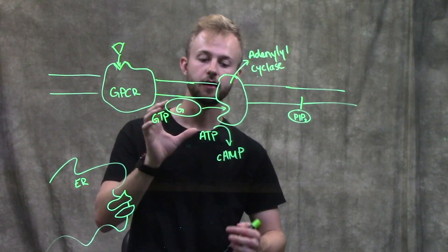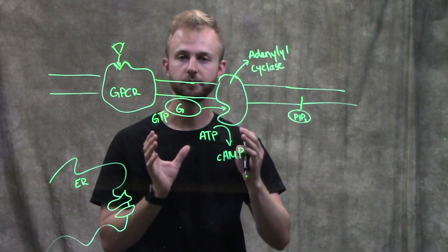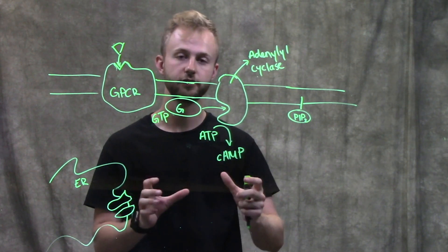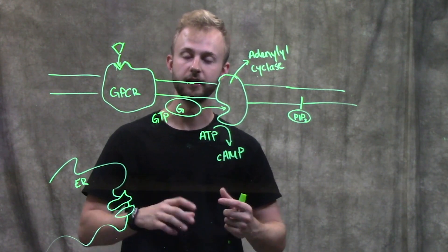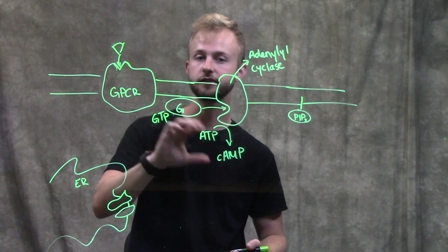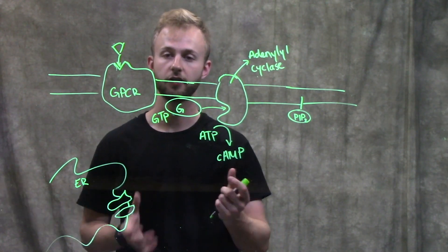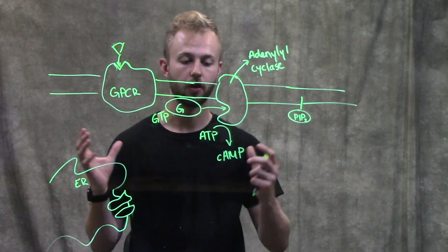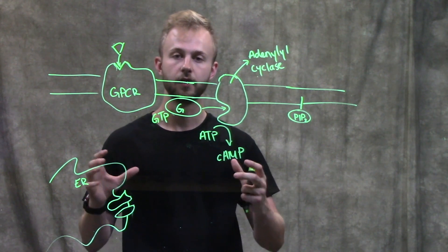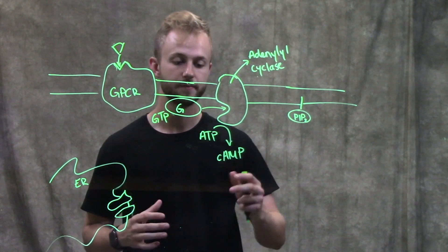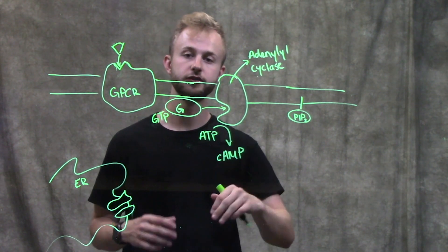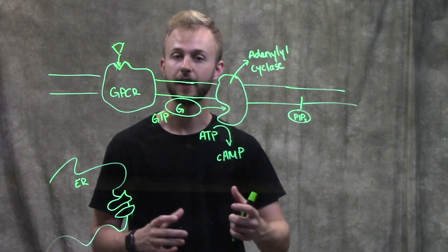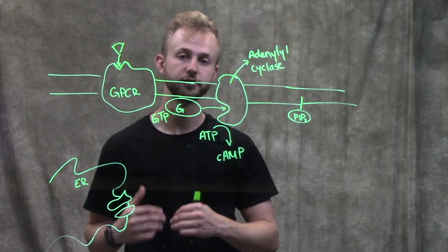But when we have this happening, there's going to be production of multiple molecules of cyclic AMP very rapidly, as well as you'll have the same process going on on different GPCRs on other spots on the cell. So all of this is going to go on at the same time and our cyclic AMP concentrations inside the cell are going to get really high, and that's what's actually going to cause the cellular response.